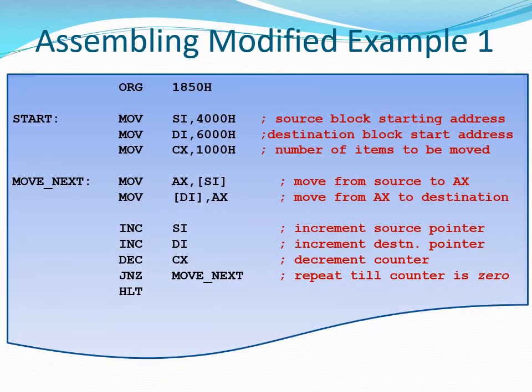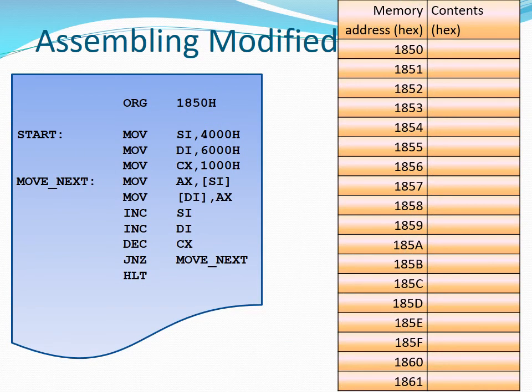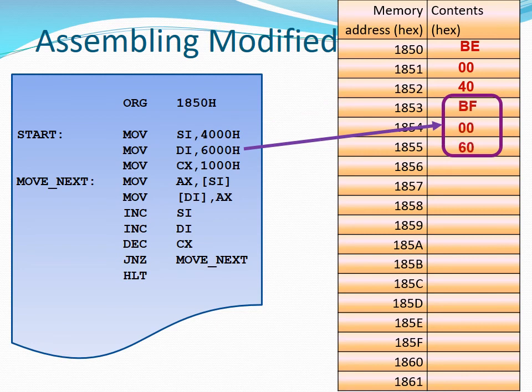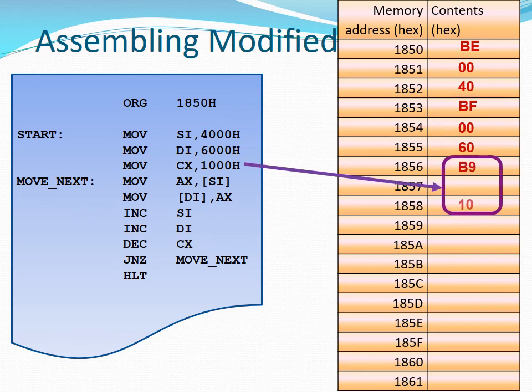The copy-paste program can be used to illustrate assembly when our program contains labels. We intend to load this program starting at address 1850H. The first instruction is 3 bytes, going into addresses 1850 up to 1852. The second instruction is 3 bytes going into addresses 1853 up to 1855. The third instruction is 3 bytes again, going into addresses 1856 up to 1858.